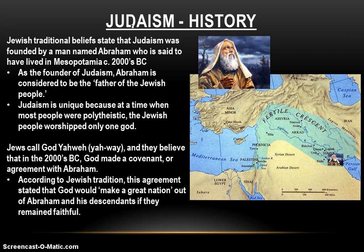Jewish traditional beliefs state that Judaism was founded by a man named Abraham, who is said to have lived in Mesopotamia, in the Fertile Crescent, sometime in the 2000s BC. There's no way to prove whether or not Abraham existed. All three major monotheistic religions look to Abraham as a traditional ancestor, but outside of the religious writings, there's no evidence of his existence — it becomes simply a matter of faith.